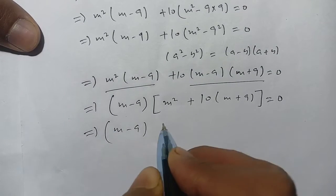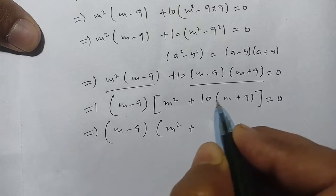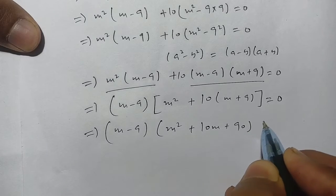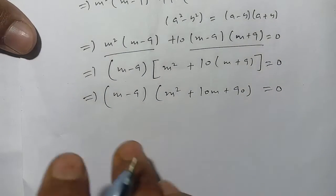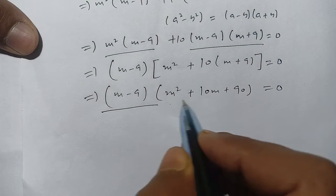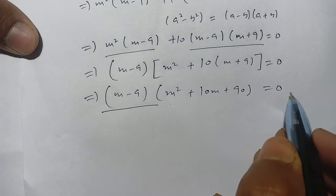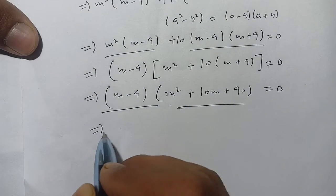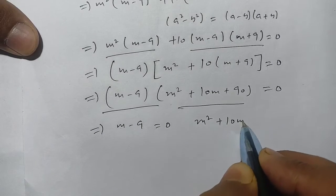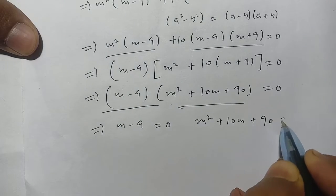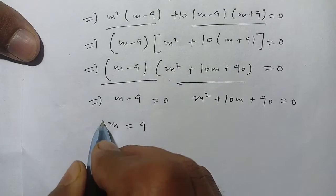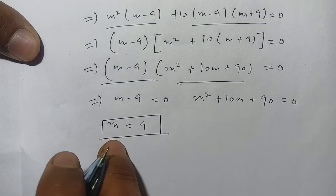This simplifies to (m - 9)(m² + 10m + 9) = 0. We equate both factors to zero: m - 9 = 0 and m² + 10m + 90 = 0. From the first factor, m = 9, which is our first solution.